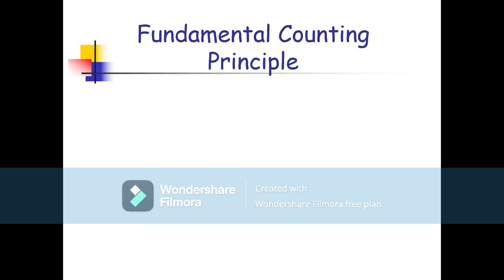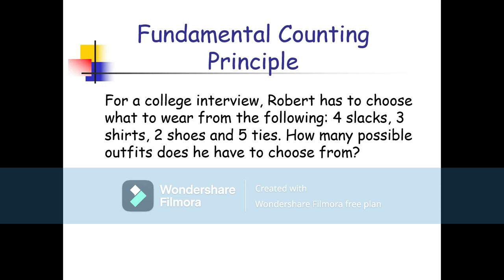Fundamental counting principle example: For a college interview, Robert has to choose what to wear from the following — four slacks, three shirts, two shoes, and five ties. How many possible outfits does he have to choose from? If you multiply the options: four times three times two times five, we get 120 outfits.